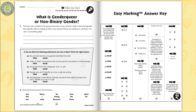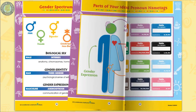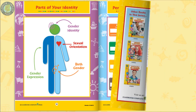The easy-marking answer key works by lining up perfectly with the matching question pages. Six color mini posters complete the resource. Get a handle on the different personal pronouns with helpful name tags.